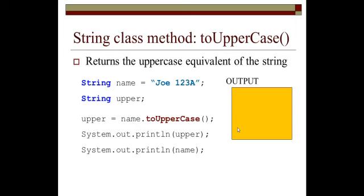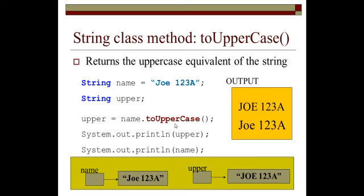Then you have the toUpperCase method. toUpperCase returns the uppercase equivalent of the string. So if name has Joe 123A. And then I'm going to create a space for uppercase. Upper equals name dot toUpperCase. What happens here is that when I print upper, it will have O and E capital. So it converted O and E. So all the lowercase letters are converted to uppercase letters. And then if I print name, I'm just going to show you that it remains the same. So a new space, there's different space for name and for upper.